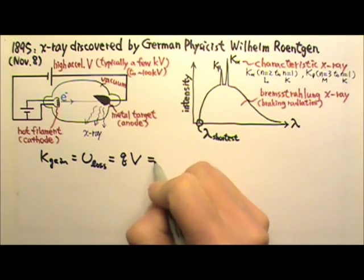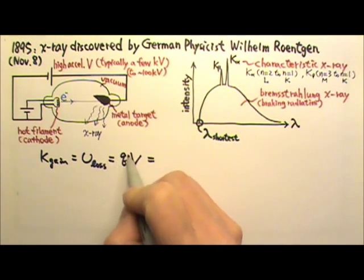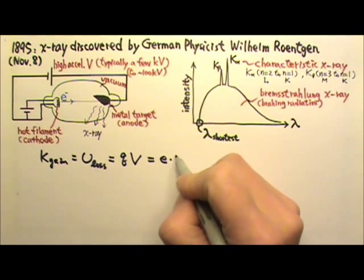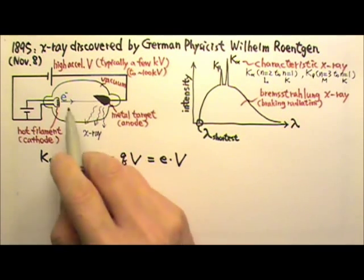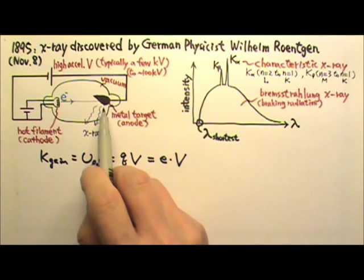Since we are talking about electrons, the Q, the charge of an electron, is 1e. So e times V gives us the kinetic energy gain of the electrons when the electrons hit the metal target.